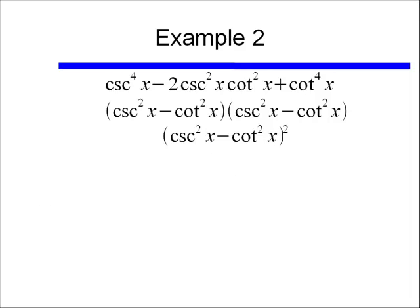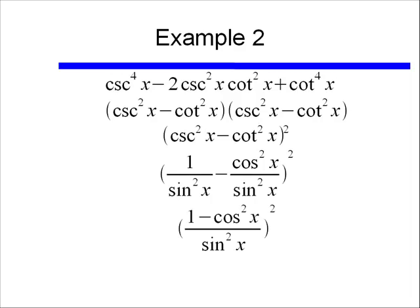But I said we can go about this two different ways. What if you didn't recognize this is a Pythagorean identity? Well the next thing I would probably do is rewrite this as sines and cosines. Cosecant squared x would be equal to 1 over sine squared x, and cotangent squared x would be cosine squared x divided by sine squared x. Once I do this, I already have a common denominator, so I can go ahead and add these fractions, and I get 1 minus cosine squared x divided by sine squared x.